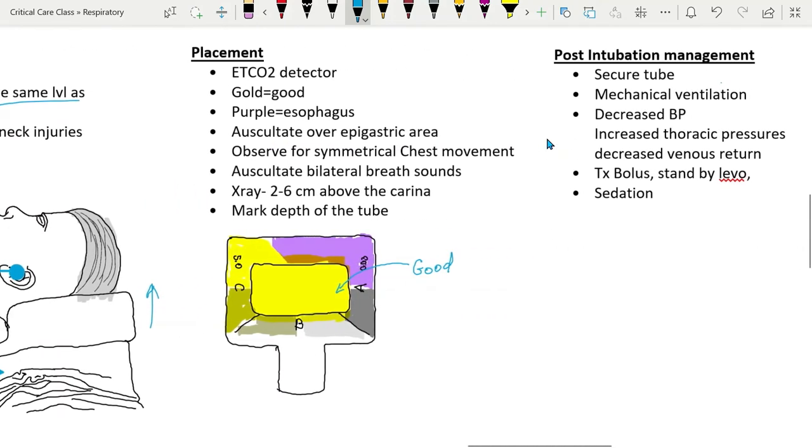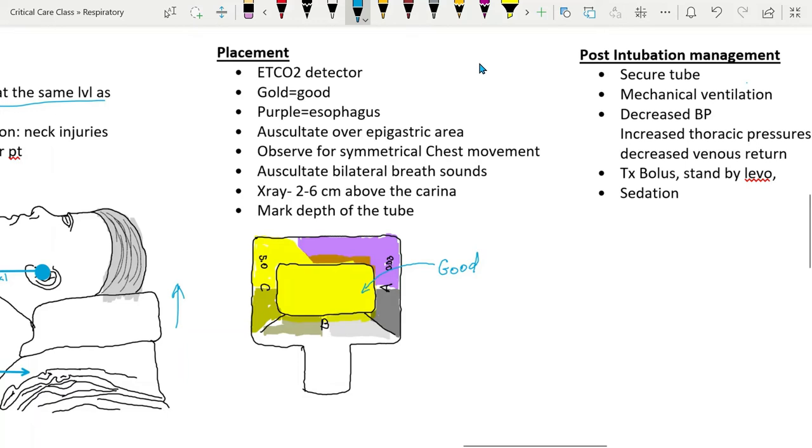Next is placement. Once trained and certified provider in intubation placed the tube, it is important to verify the placement. First with CO2 detector. This type of color based CO2 detector changes color to yellow when it detects CO2 coming out of the lungs on exhalation. It will remain purple if no CO2 is detected. It can be easily remembered as yellow is gold and gold is good what we want. Purple patient is not good, so we don't want purple. Purple color may indicate that endotracheal tube is in the esophagus.